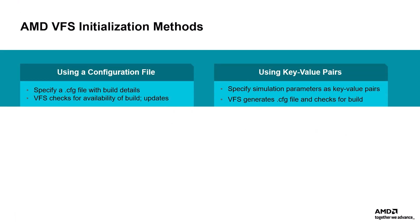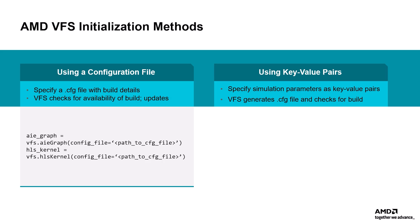Vitis functional simulation VFS is designed to simulate AI engine graphs and high-level synthesis HLS kernels. There are different ways to instantiate an AI engine graph or HLS kernel object. If you have a configuration.cfg file that specifies the build details such as source files, platform, etc., you can input it to VFS. The system will check if a valid build already exists based on this configuration before simulating it. If no up-to-date build exists, it will initiate a build first.